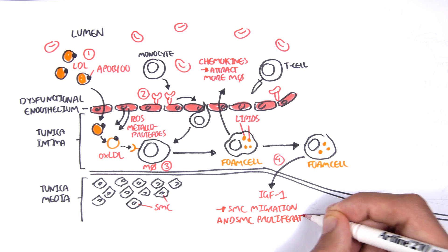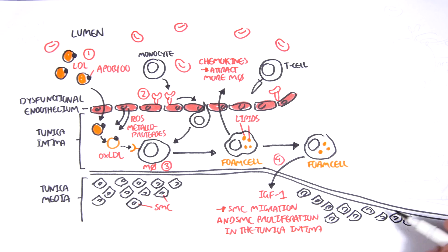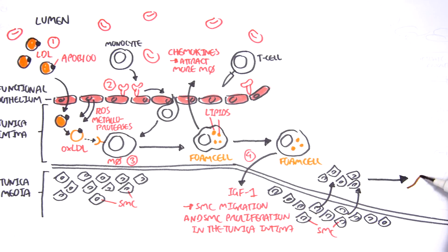And this growth factor will cause smooth muscle cells to migrate and cause smooth muscle cell proliferation in the tunica intima. So here we have the smooth muscle cells in the tunica media layer, and they will migrate into the tunica intima layer, and they will proliferate. And here, because we have a lot of smooth muscle cells, step five, they make more collagen.